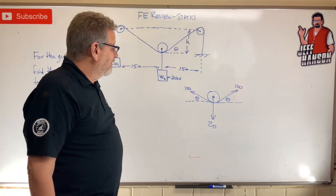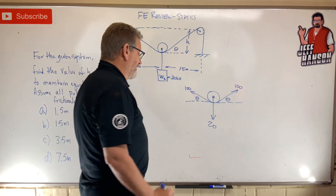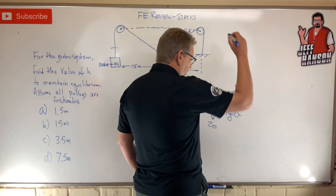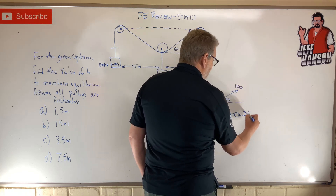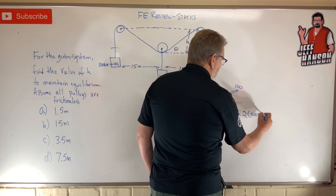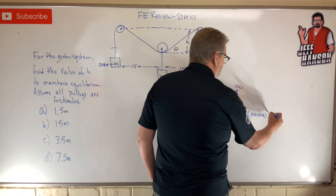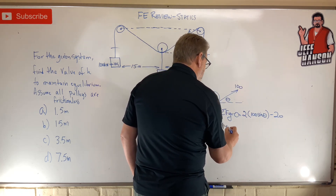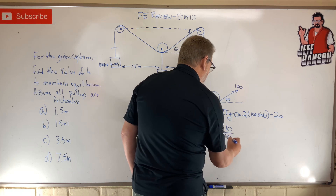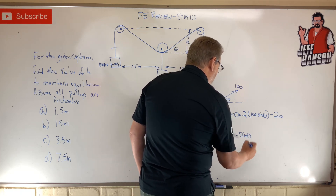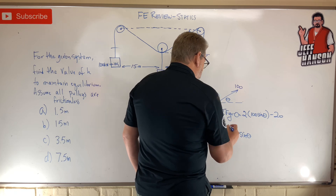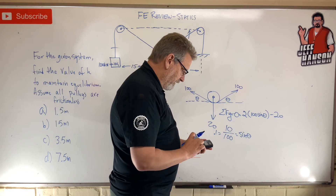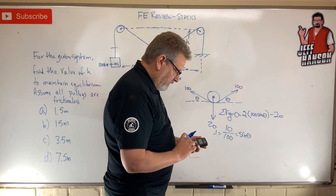This is a perfect job for the sum of forces in the Y direction. Sum of forces in Y equals 0: going upward we have 2 times 100 times sine of theta, going downward minus 20. Move the 20 to the other side, divide by 2 — that becomes 10 divided by 100, which equals sine of theta. So sine of theta equals 0.1.